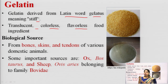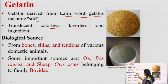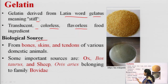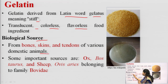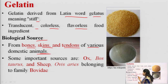Gelatin is also used in pharmaceutical industries and food industries. It is obtained from various animal sources — mainly from the bones, skin, and tendons of various domestic animals.